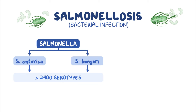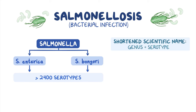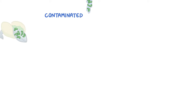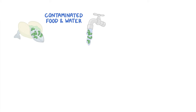Some of those serotypes are named. In such cases, people often shorten the scientific name to include only the genus and serotype. For example, S. enterica, subspecies enterica, serotype typhi, is shortened to Salmonella typhi. Salmonellosis is usually transmitted through contaminated food or water, and is typically caused by serotypes of the Salmonella enterica species.